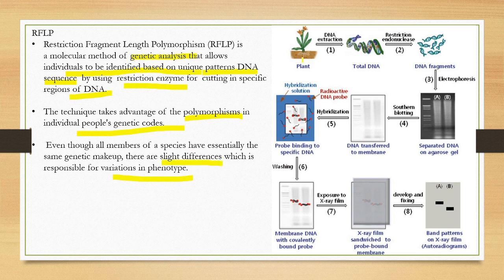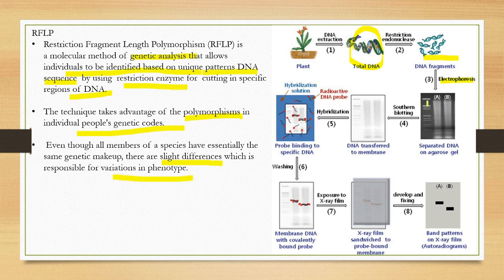In the RFLP procedure, DNA is extracted from a plant or organism. The total DNA is then cut by specific restriction endonucleases. The resulting DNA fragments are separated by electrophoresis in the same way described previously, so the fragments are separated by size on an agarose gel.